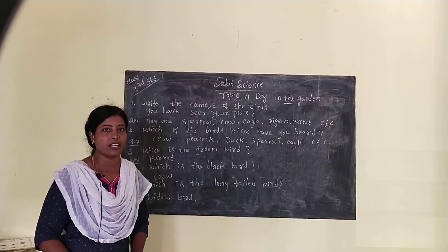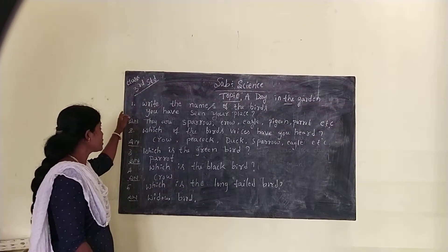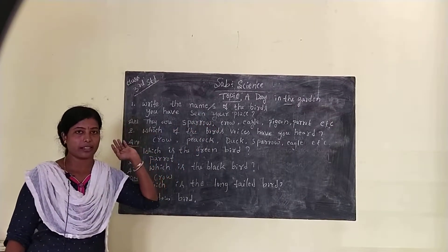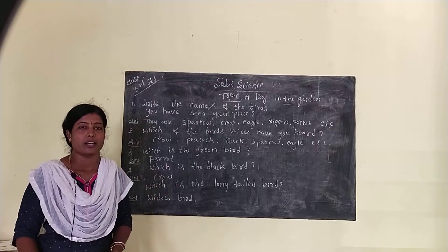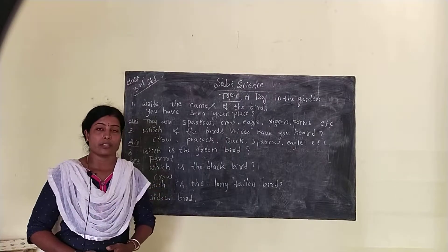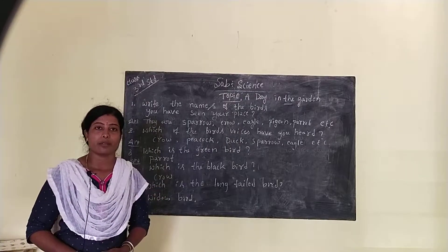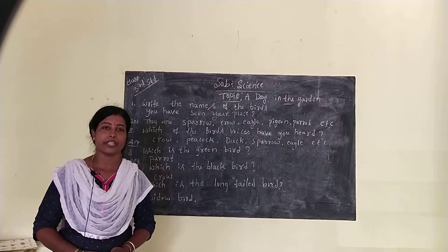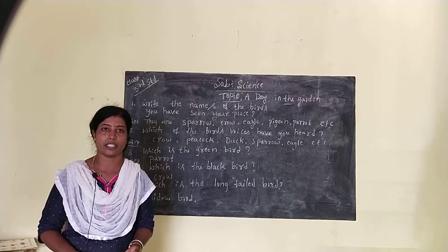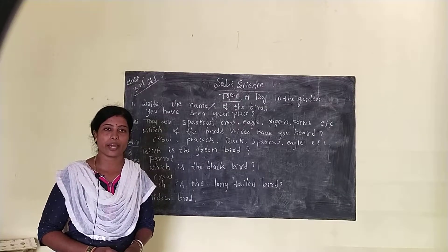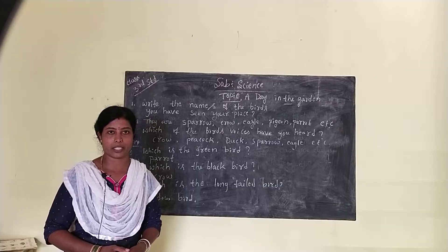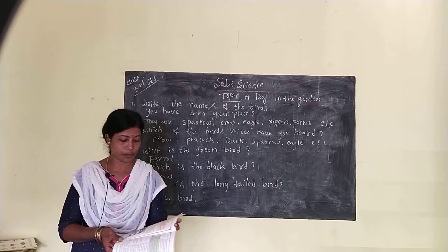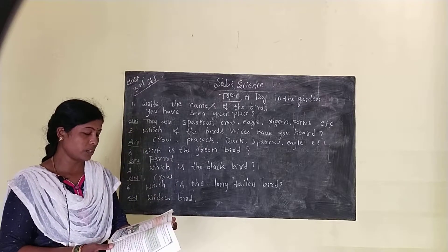Hi dear children, today I am going to teach third standard topic: A Day in the Garden. In this lesson we are going to learn about different types of birds, animals, and insects. They have different colors, different sizes, and also different food habits.